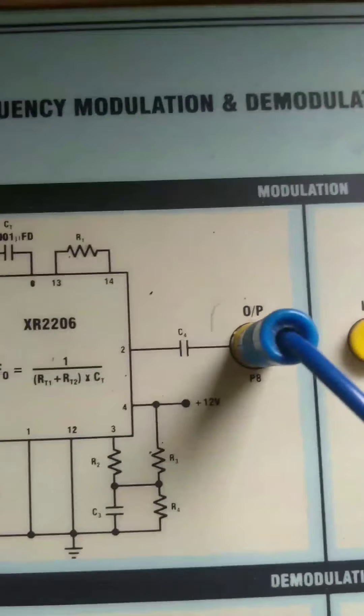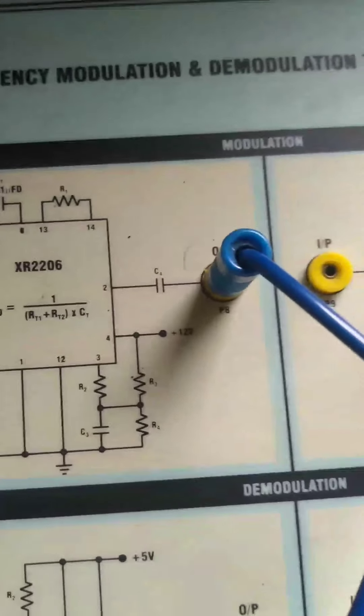Next is the carrier. The XR2206 generates the carrier. The carrier frequency is determined by the input.